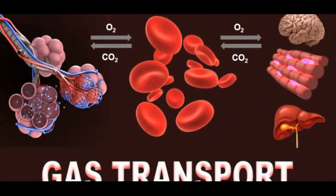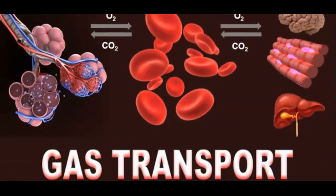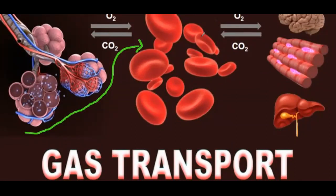Now let us talk about gaseous transport — that is oxygen and CO2 transport. Oxygen from the alveoli is transported to the blood, and carbon dioxide is transported to the alveoli. Oxygen is then transported to various tissues — brain, muscle tissue, liver, kidney — basically every organ that needs energy.